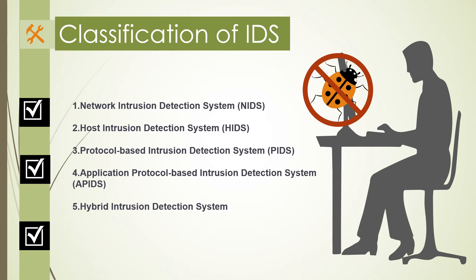Classification of Intrusion Detection Systems: IDS are classified into five types. The first is Network Intrusion Detection System (NIDS), set up at planned points within the network to examine traffic from all devices. It performs observation of passing traffic on the entire subnet, matches traffic to a collection of known attacks, and sends an alert to the administrator when an attack is identified. An example is installing NIDS on the subnet where firewalls are located to detect firewall cracking attempts.